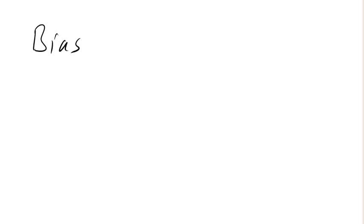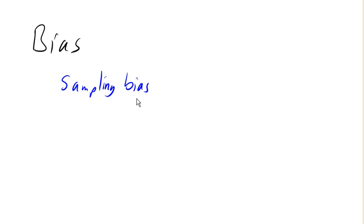Next we're going to look at some sources of bias. Bias is a systematic distortion of your statistical results, which comes from something influencing the data. One version of this we already talked about is called sampling bias. Sampling bias is what you get when your sample is not actually representative of your population, and the data you collect from your sample can't really be trusted — it's distorted because it's not representing the population you're actually trying to talk about.